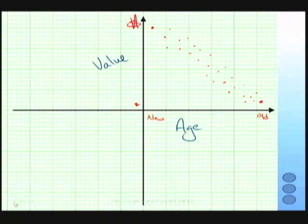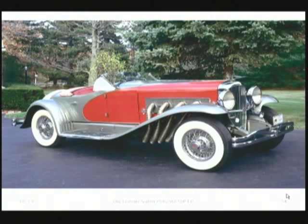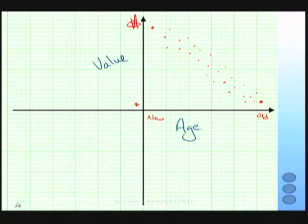Now there's one more thing to consider that we talked about as outliers. Here's an example of one. I forgot the name of this car, but it's really rare and very old, and it's worth over a million dollars. If we were to graph this, then this would look like maybe somewhere up here. It would correspond to being very old but worth a lot of money.